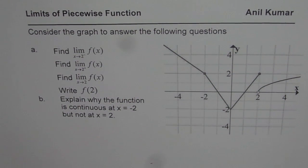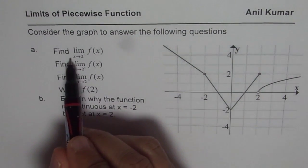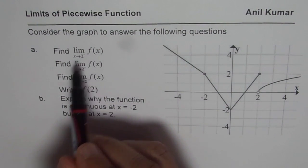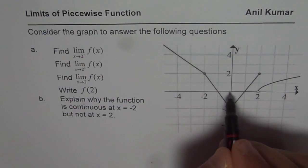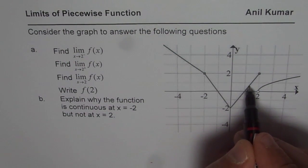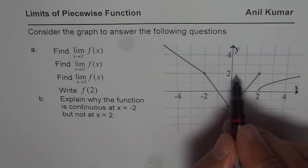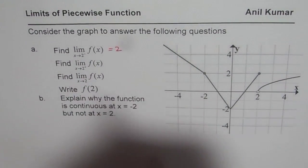Let's begin with the very first one: the limit of this function as x approaches 2 from the negative side. Negative means the left side, so that's the point 2. If I am approaching from the left side, I am actually on this part of the graph, and I reach a value of positive 2.